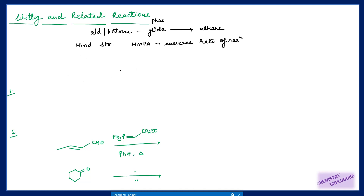The general reaction mechanism: suppose I have a ketone reacting with a phosphonium ylide. The phosphonium ylide is formed by the reaction of triphenylphosphine and alkyl halides in presence of lithium bases — generally butyl lithiums and LDAs are used. The ylide has a negative charge on carbon and a positive charge on phosphorus, and it can also be written in double bond form.